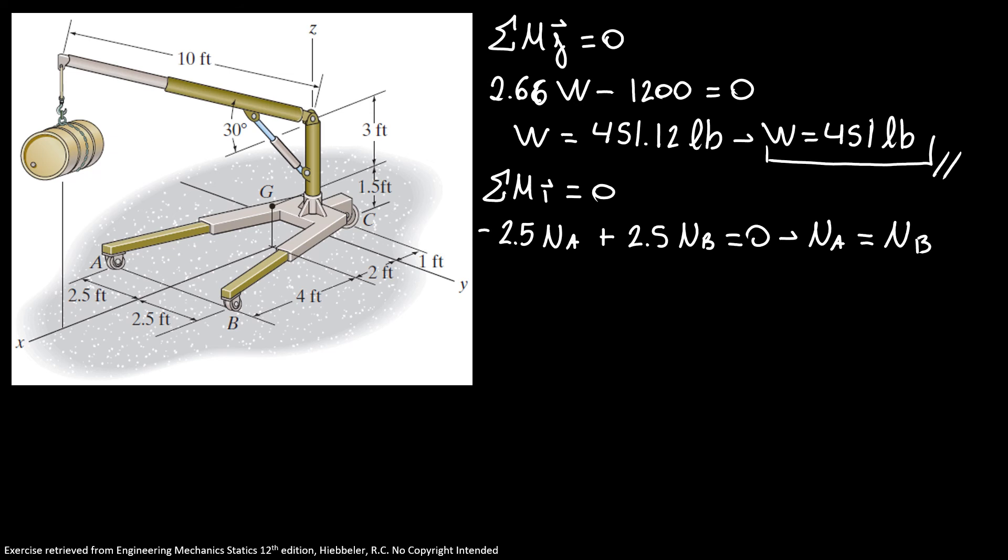Now, we can use the sum of forces in z direction is equal to 0. So, we have normal A plus normal B. We saw that for a maximum weight, the normal C is 0, minus 300 pounds, the weight of the crane, minus 451 pounds for the weight of the oil drum is equal to 0.